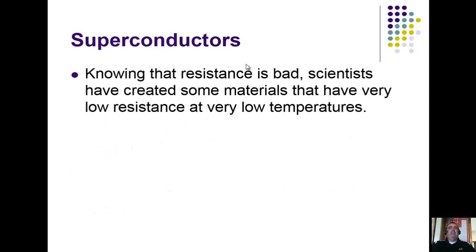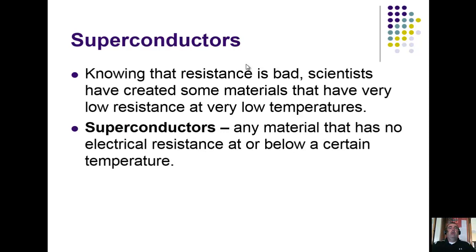Knowing that resistance is bad, scientists have created materials that have very low resistance at very low temperatures. As temperature goes down, those particles don't come into contact with one another. Lower temperatures create lower resistance. Some substances have absolutely no resistance at all, and those are called superconductors—any material that has no electrical resistance at or below a certain critical temperature.